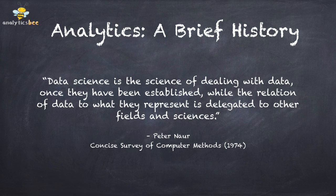In 1974, a computer scientist called Peter Nauer defined data science as the science of dealing with data once they have been established, while the relation of data to what they represent is delegated to other fields and sciences. He was not particularly fond of the term computer science and suggested renaming it to data science.